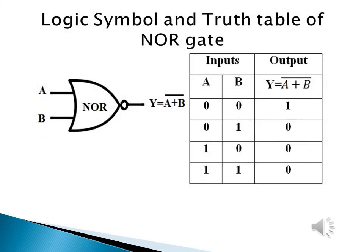We can see the logic symbol and truth table of the NOR gate. The symbol shows two inputs and one output, combining the OR gate and NOT gate. In the truth table, if both inputs are zero, the output will be one. If both inputs are one, the output will be zero. And if any one of the inputs is one, the output will also be zero.